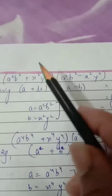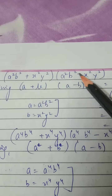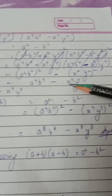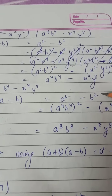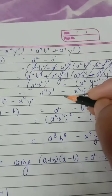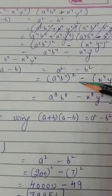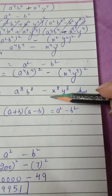Now we have a question with three brackets. The first and the second bracket are in the form of (a + b)(a - b), so we use the identity for the first two brackets. After solving the first two brackets we get a⁴b⁴ minus x⁴y⁴. We combine this answer with the third bracket — again one has a plus sign and the other has a minus sign — and applying the identity again gives a⁸b⁸ minus x⁸y⁸.